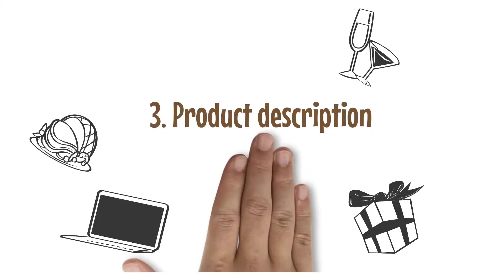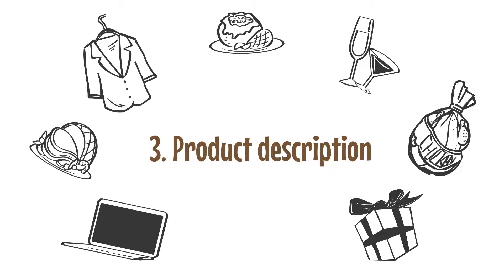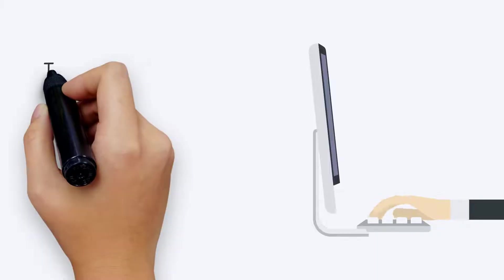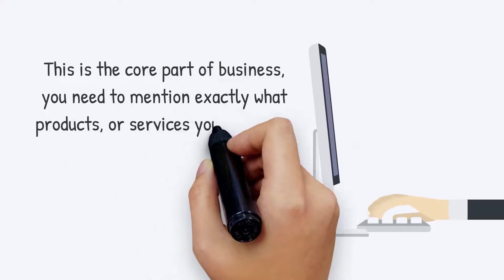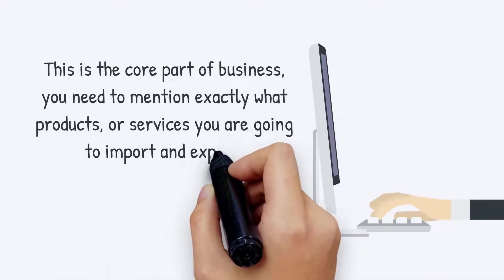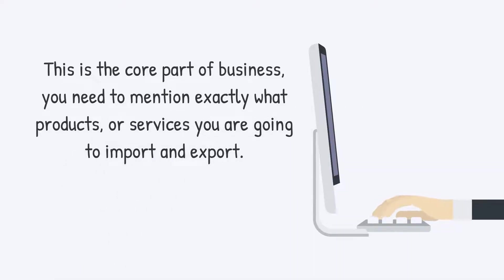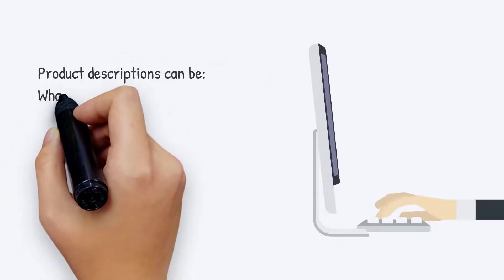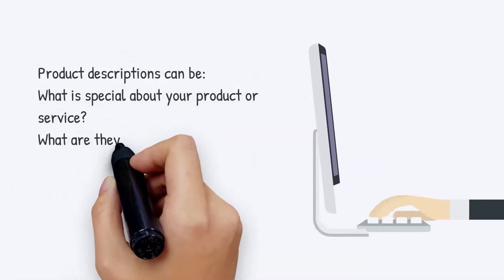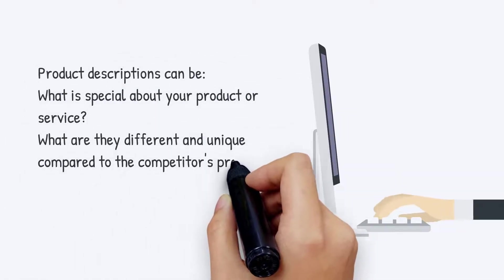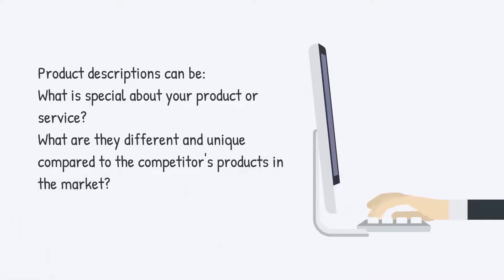3. Product Description. This is the core part of the business. You need to mention exactly what products or services you are going to import and export. Product descriptions can include what is special about your product or service, and what makes them different and unique compared to competitors' products in the market.